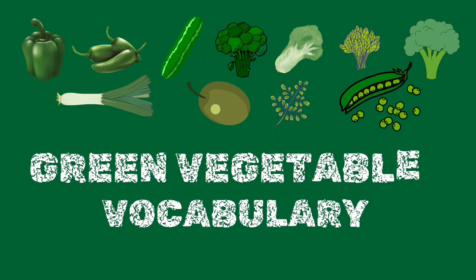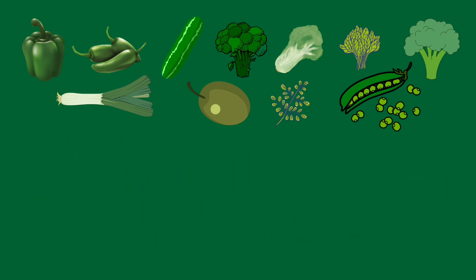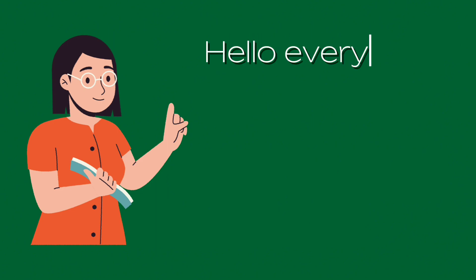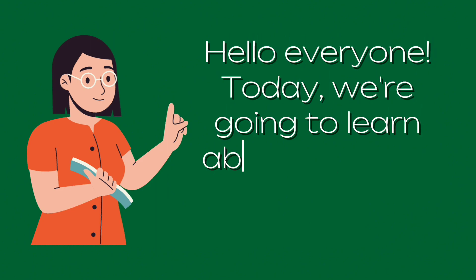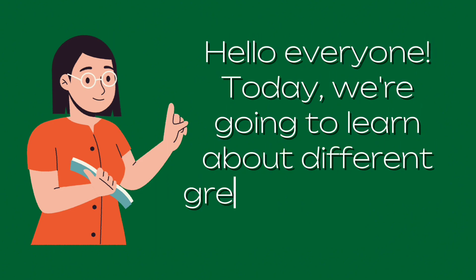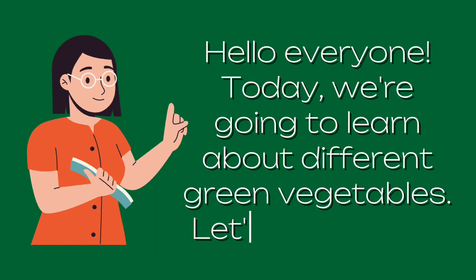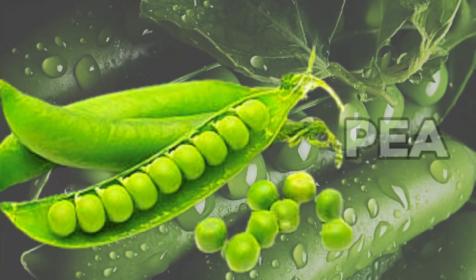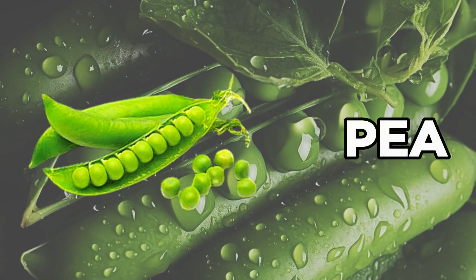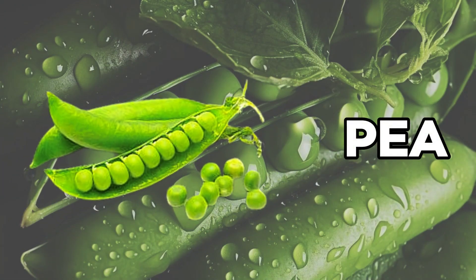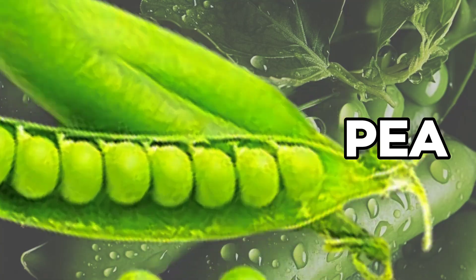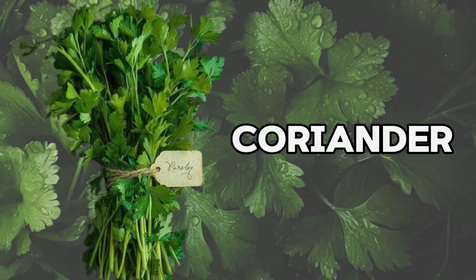Green vegetables vocabulary. Hello everyone, today we're going to learn about different green vegetables. Let's start. Pea, coriander.